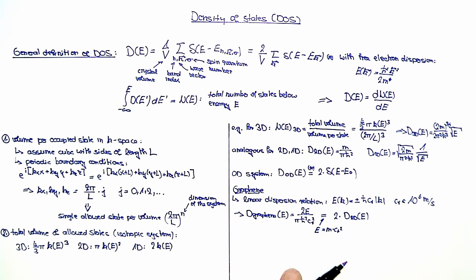You can see that the charge carriers in graphene mimic relativistic massless particles. If we go to zero energy in theory, we would have zero density of states. However, in an experiment, one has, for example, background fluctuations of the potential, which lead to a non-zero density of states at zero energy.